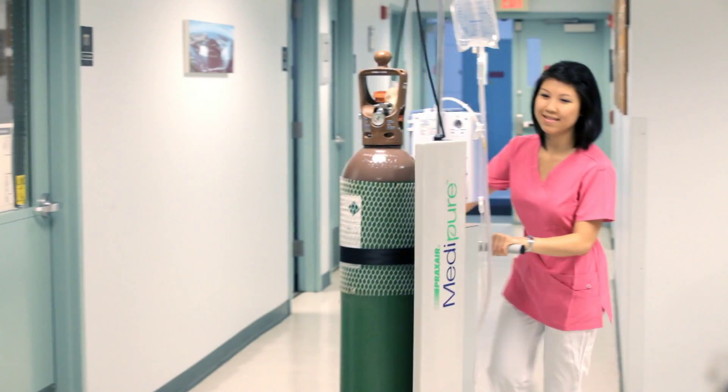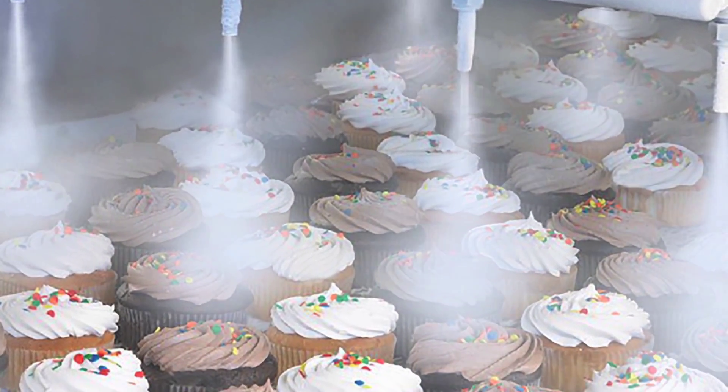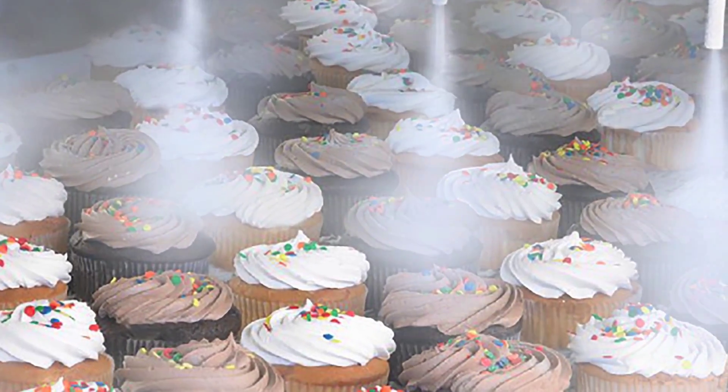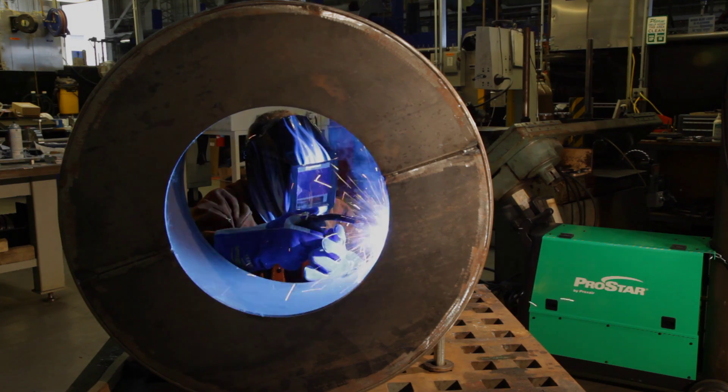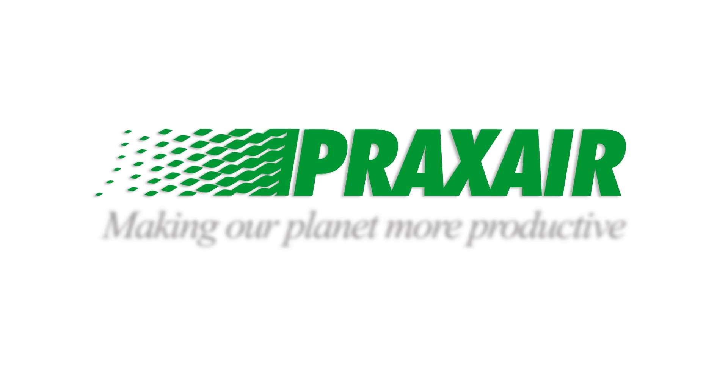Oxygen can be used by hospitals or steel mills. Nitrogen is used to freeze foods or to make chemical plant piping safe. And argon is used in welding and metals production. These are just a few of the ways air separation is making the planet more productive.